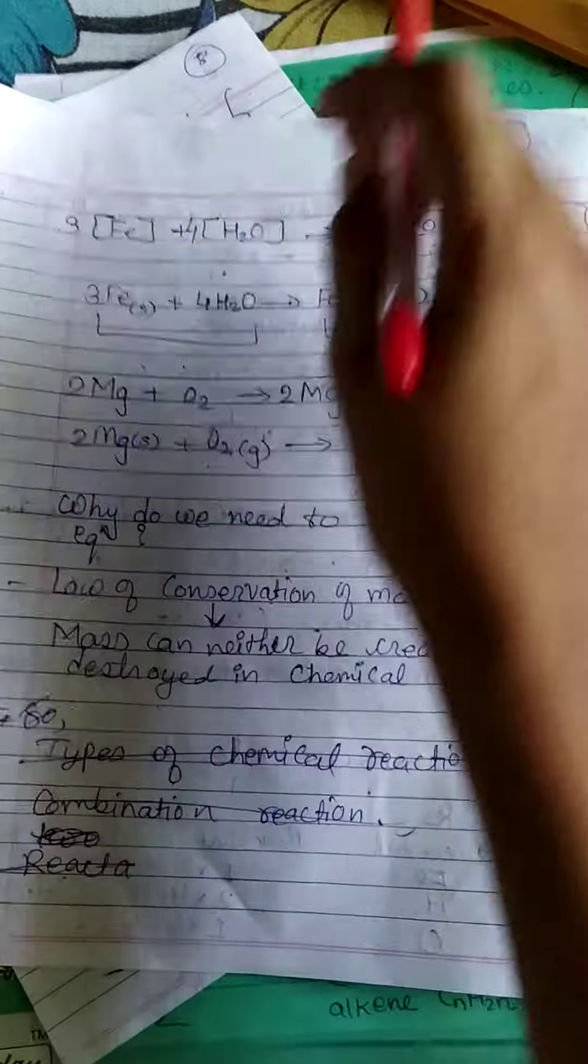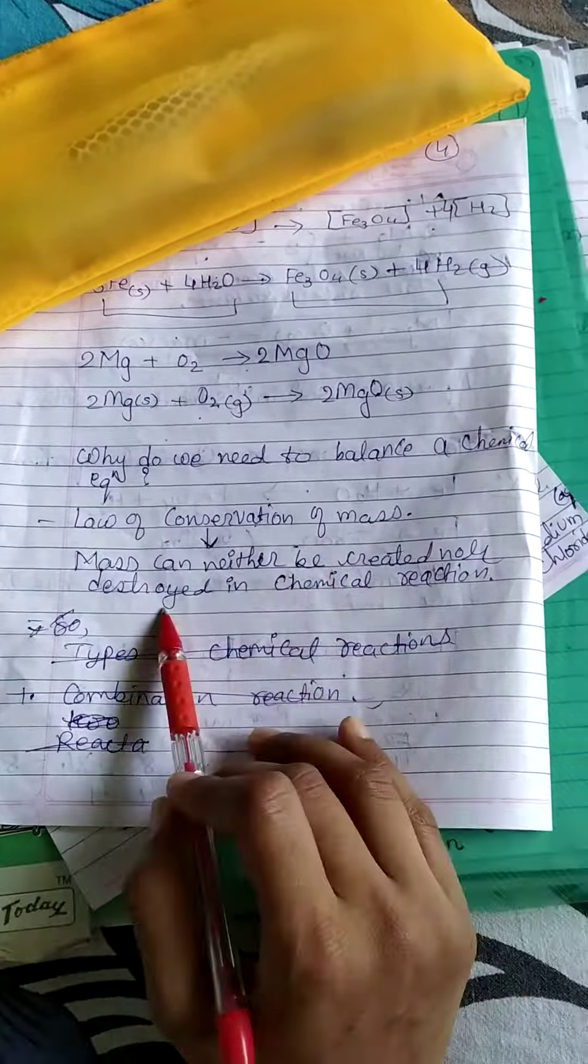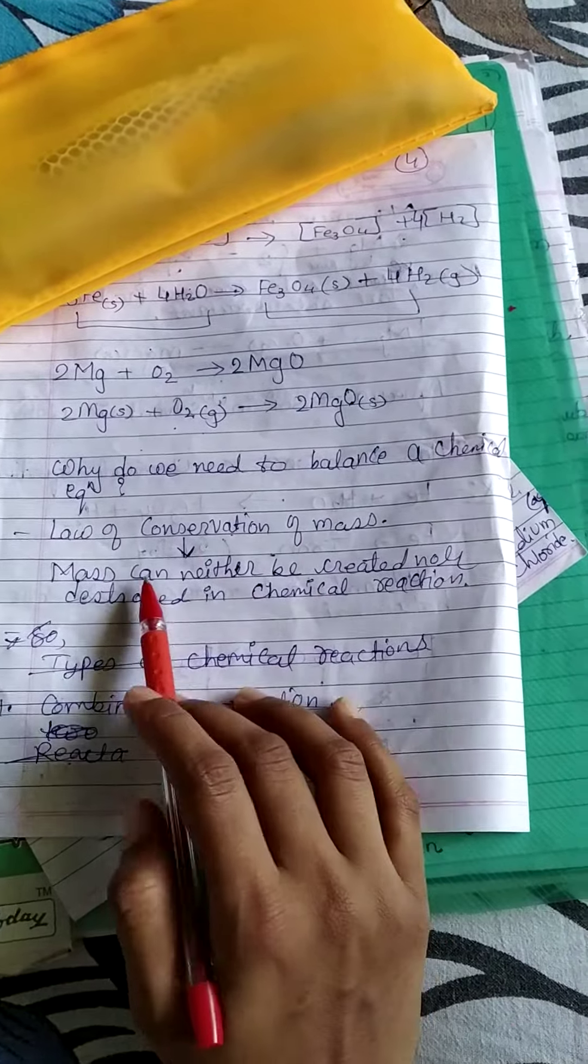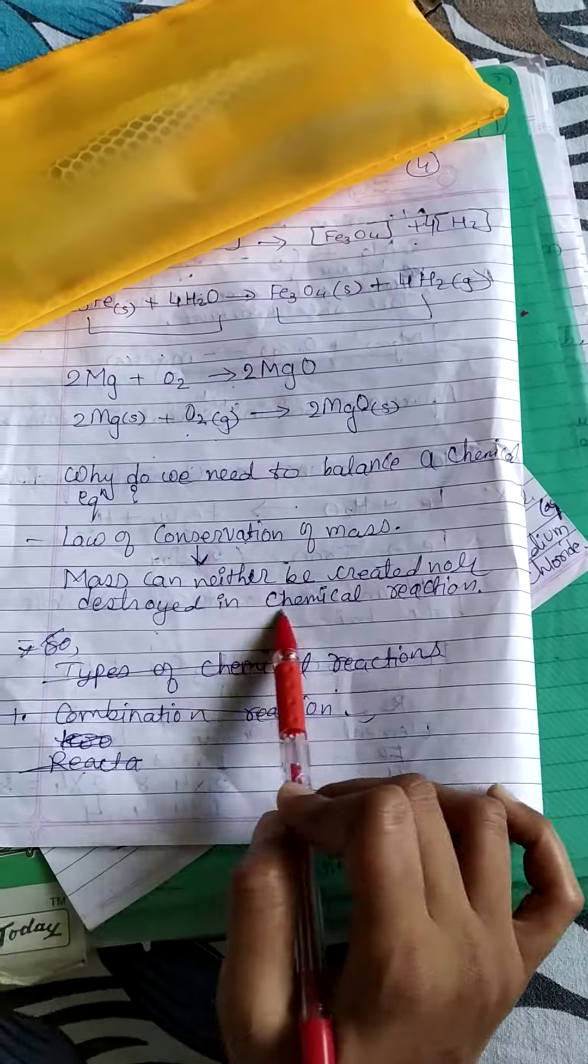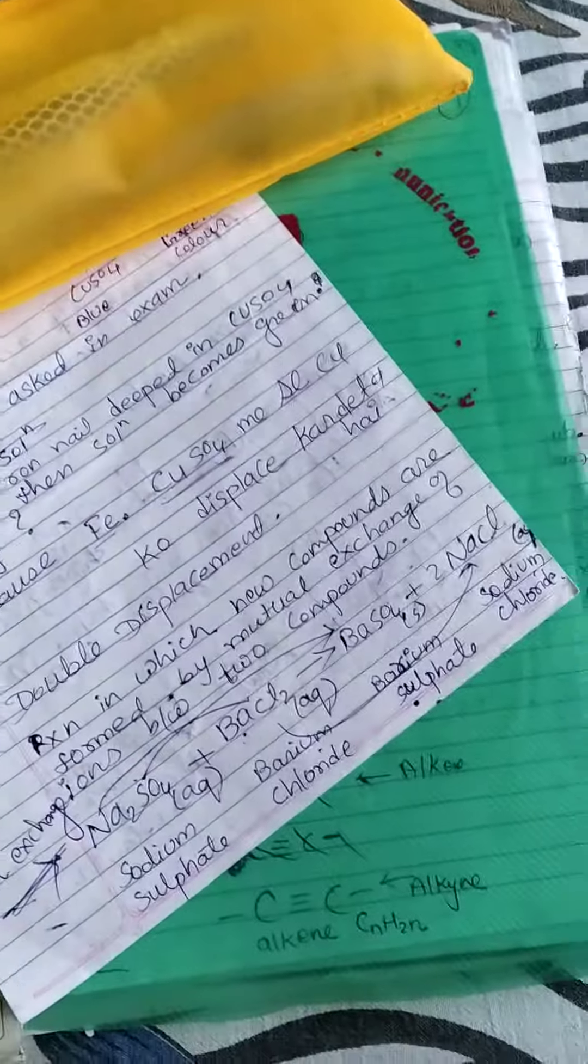Next question is, why should we balance this reaction? Because conservation of mass law follows. Mass can neither be created nor can be destroyed. That's why we have to balance the chemical reaction.